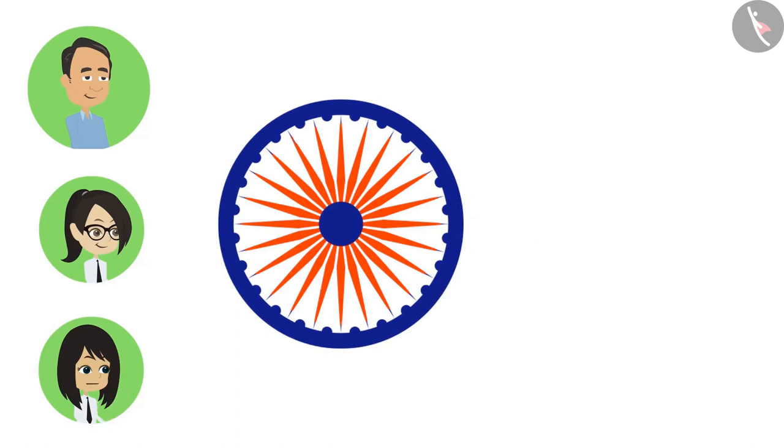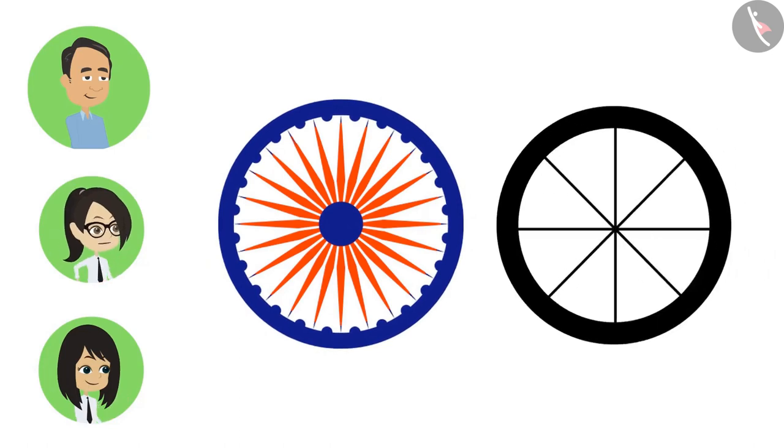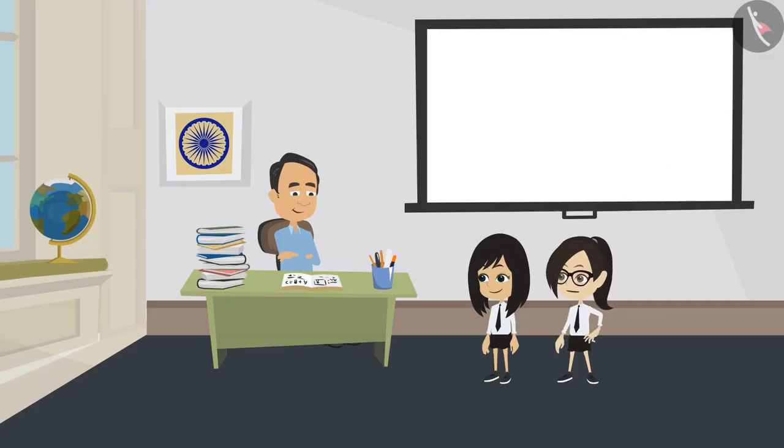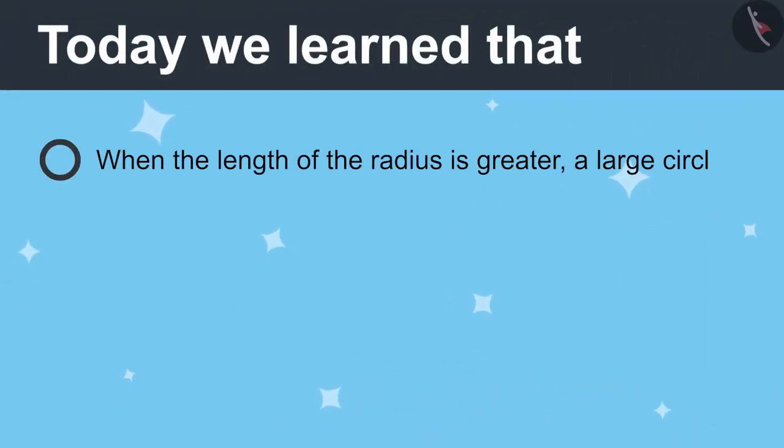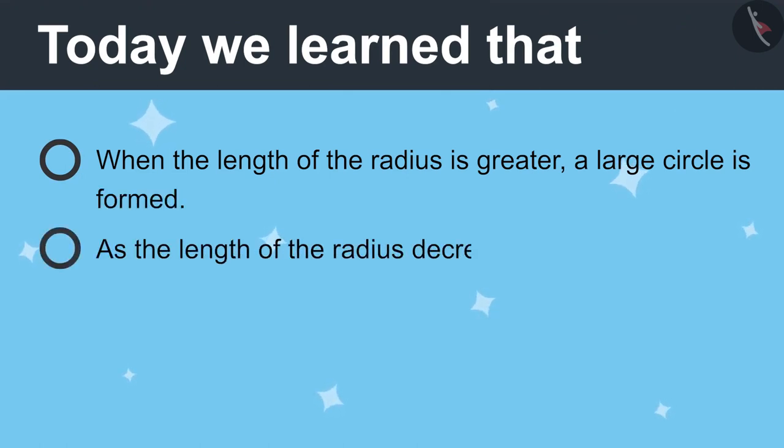like in the Ashok Chakra and also in the wheel of our bicycle. Now I understand, sir. Today we learned that when the length of the radius is greater, a large circle is formed. As the length of the radius decreases, a small circle is formed, and there are many radii in one circle.